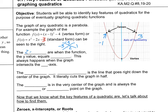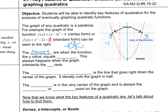The zeros are when the function's y-value equals zero. You can see that on the graph — the zeros are when the graph has a height of zero, where it intersects the x-axis. That's why we call them zeros.